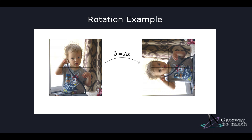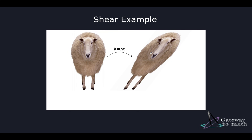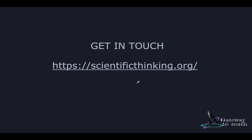For shear: A = [1, 1; 0, 1] multiplied by [x, y] gives [x+y, y] — the value is extended on the x-axis while the y value stays the same. That's the shear example. So that's pretty much it. I hope it made sense how you can represent functions in the form of matrices, plug in vector values, and check the output. If you have any questions, feel free to reach out through the comments or my website.